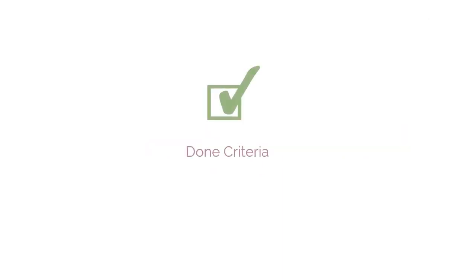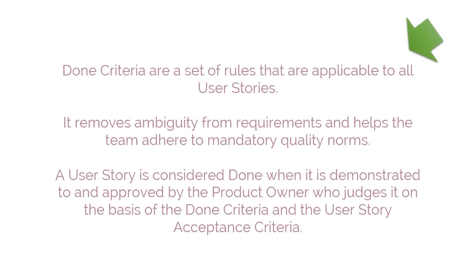Done Criteria. Done Criteria are a set of rules that are applicable to all user stories. It removes ambiguity from requirements and helps the team adhere to mandatory quality norms. A user story is considered done when it is demonstrated to and approved by the product owner, who judges it on the basis of the done criteria and the user story acceptance criteria.